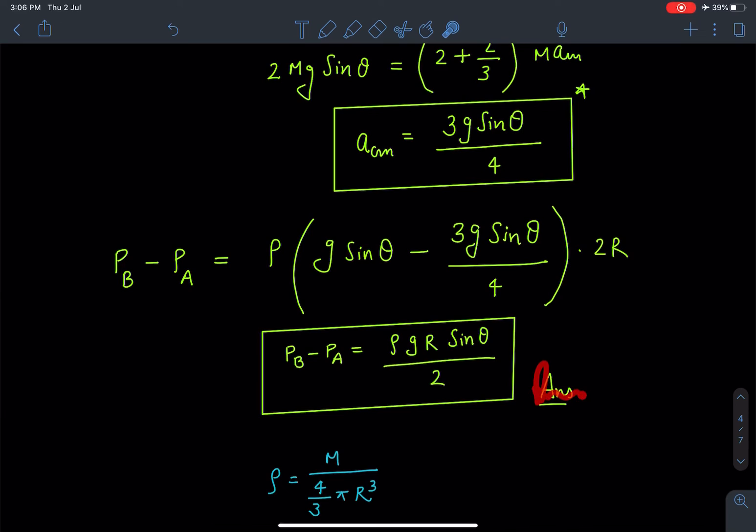And here ρ value is known to us which is mass of the liquid divided by volume of the liquid. So as you can see here ρ is m/(4/3 πR³).